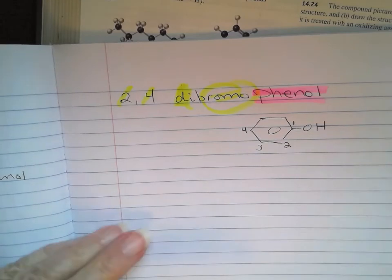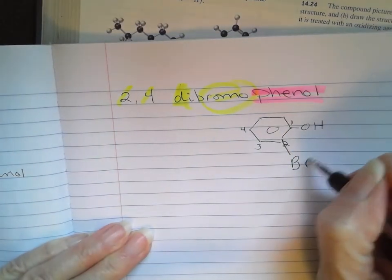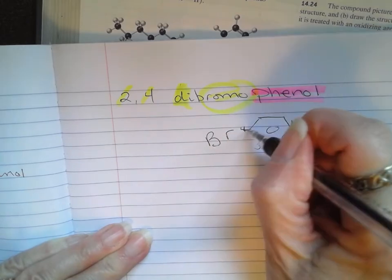So position 2, bromo, and position 4, bromo. I put little bromines.